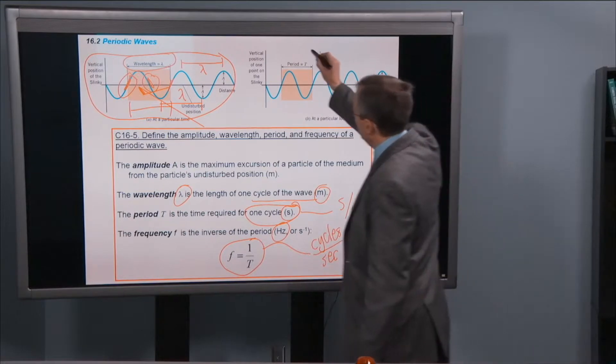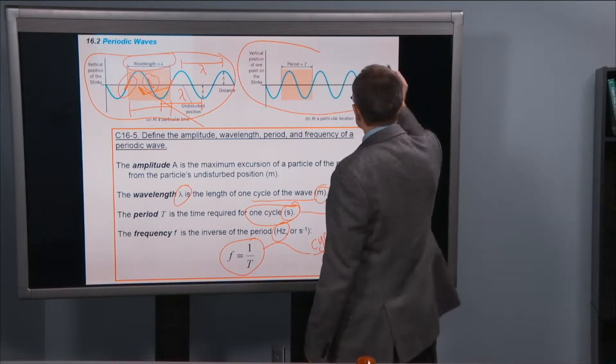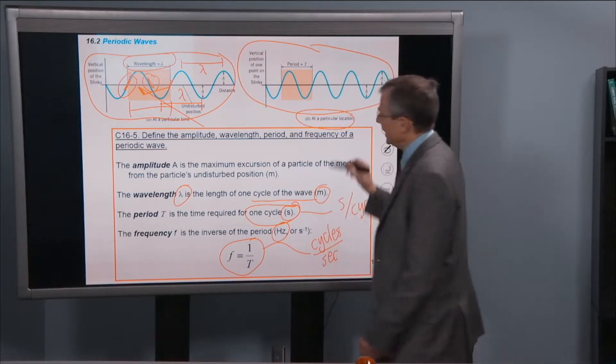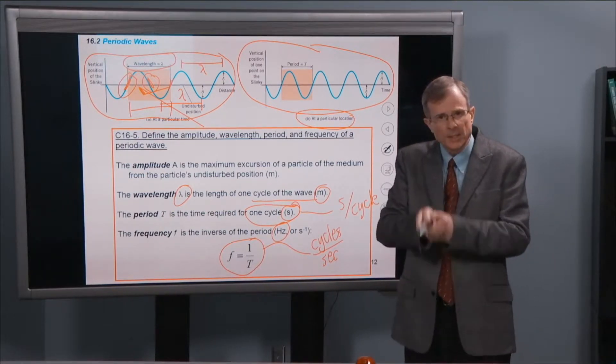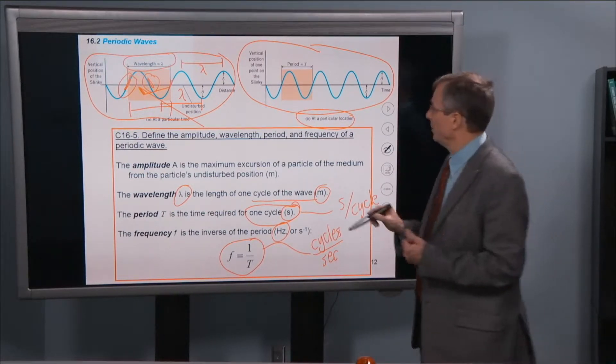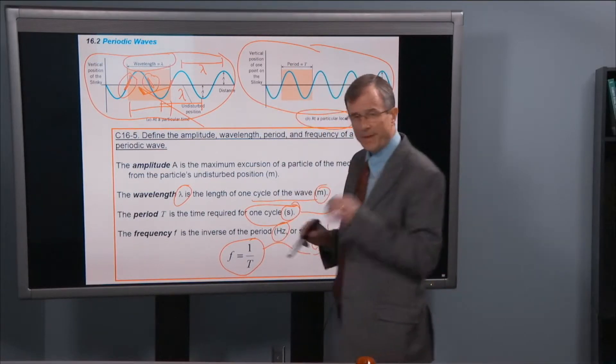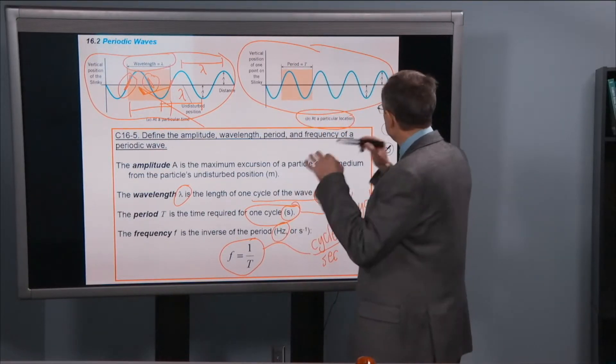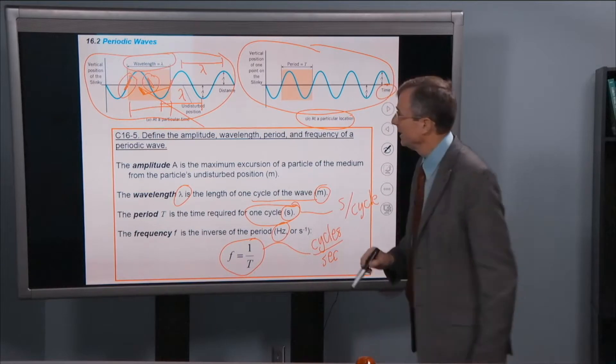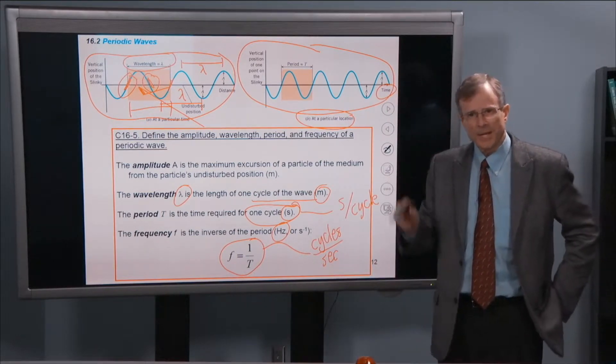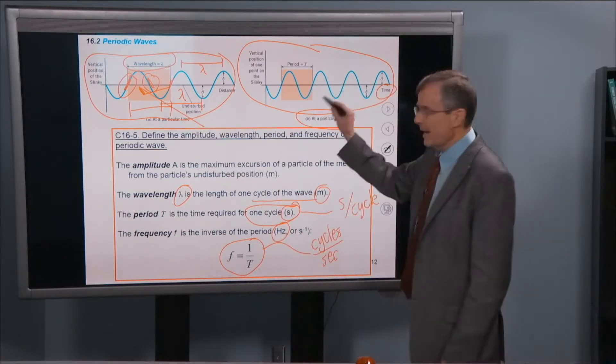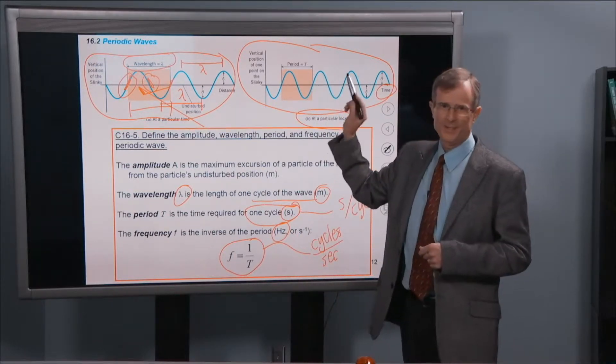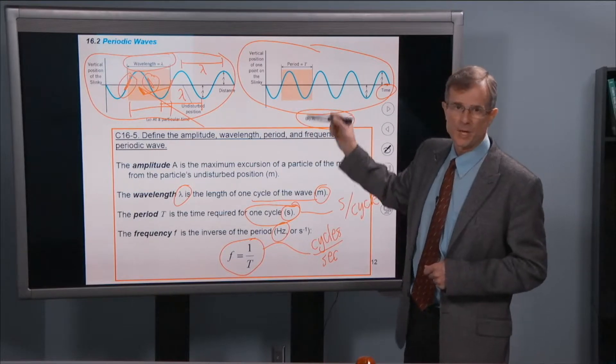So that's what's shown here. This is what happens at a particular location. So we look at maybe the end of the slinky, and we ask what the vertical position of that point on the slinky is as a function of the time. And it's going to oscillate back and forth. So this is a snapshot in space, and this is what happens at a particular point in space as a function of time.